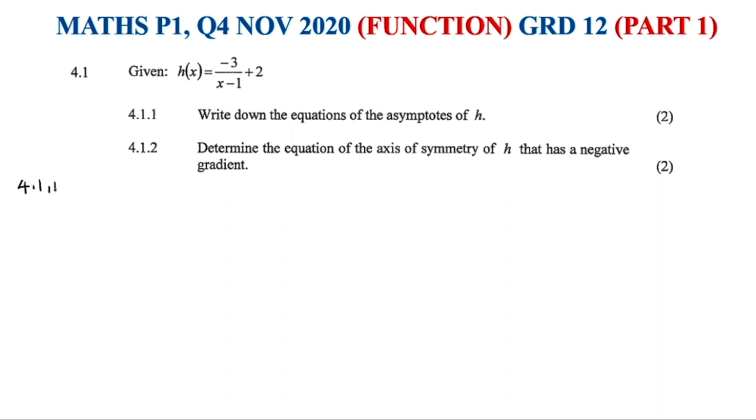4.1.1 says write down the equation of the asymptotes of h. So we know from the general formula that if the formula is given like this, the equation comes like this, as this one here, minus P plus Q. So in this case, the line of asymptotes would be P and Q. So in this instance, on this equation as it is now, the line of asymptotes would be, would have to be x = 1 and y = 2. And there goes your 2 marks. If P was positive here, therefore it will be negative, because now P is negative 1, therefore it becomes a positive one when you have to put in as asymptotes.